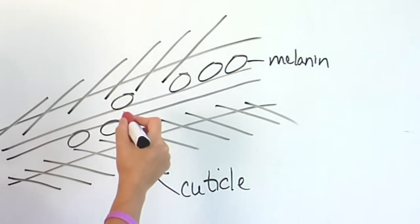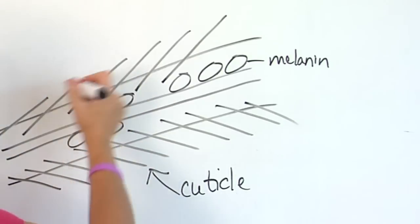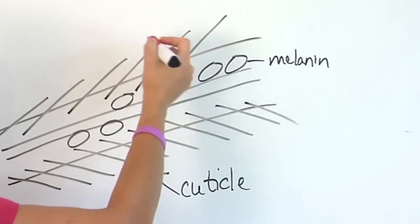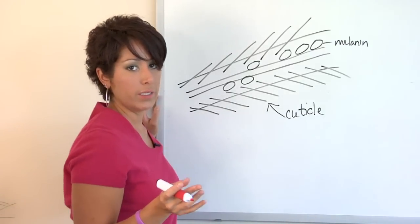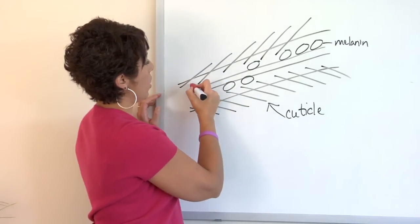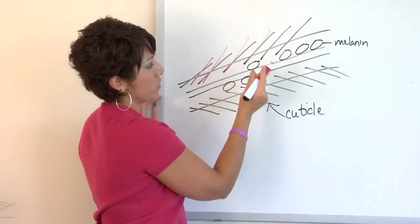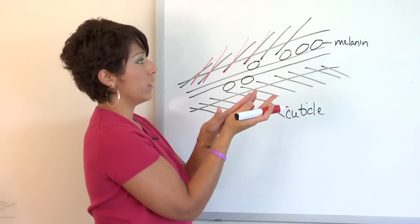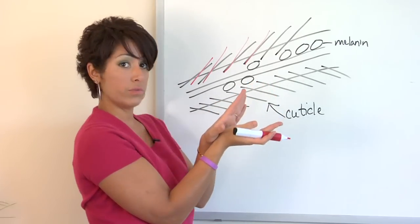This is basically melanin. So when you apply the hair dye to the hair, when you apply the color, it's got something called peroxide in it. What the peroxide does is it causes the cuticle to swell, to open up, sort of like windows, if you will.